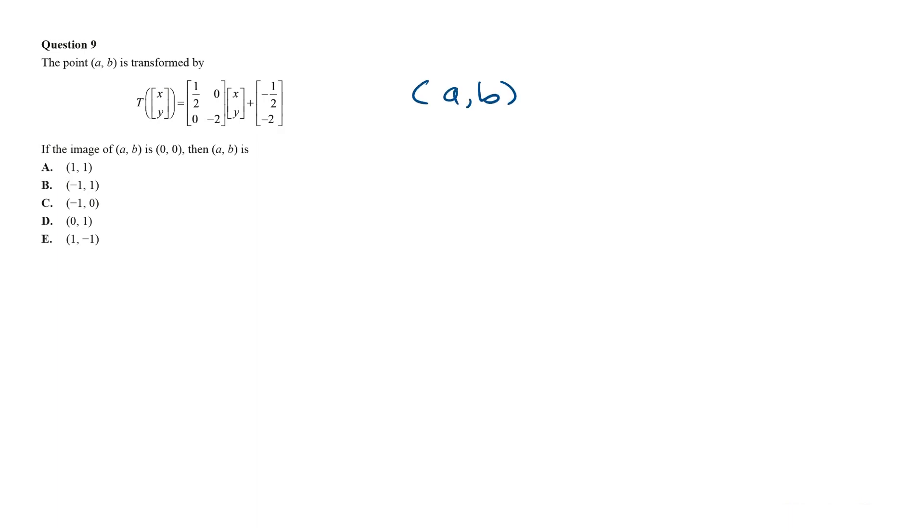If the image of AB is 0,0, this means that the point AB is the original x and y coordinates. And the point 0,0 is going to be the image point, which is x dash and y dash.